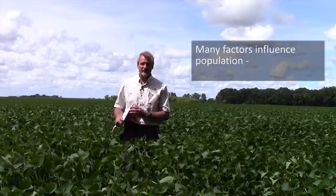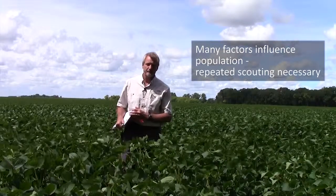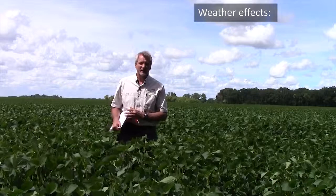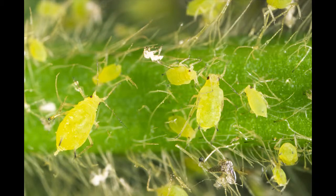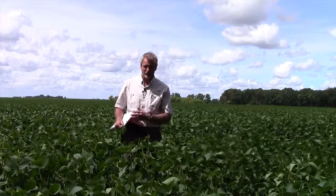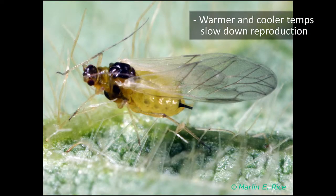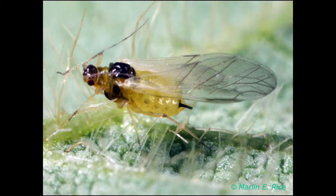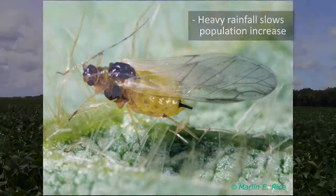There are a lot of factors that influence the population of soybean aphids, and that's why repeated scouting of a field is necessary. The weather affects soybean aphid — they will reproduce most rapidly if we have temperature conditions that are 75 to 85 degrees. In those temperatures you can get doubling of aphid populations every two to three days. Warmer temperatures will slow them down, and cooler temperatures will also slow them down. Heavy rainfall doesn't eliminate a population but it can slow down the increase of that population.